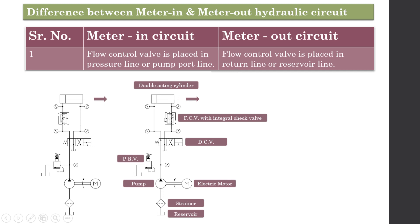In the meter-out circuit, the flow control valve with the integral check valve is placed in the return line or reservoir line — connected to the reservoir. The check valve arrangement prevents fluid from passing through it, so the fluid must pass through the restricted opening. Therefore, the liquid flowing towards the reservoir is controlled, and the forward motion of the piston is controlled.